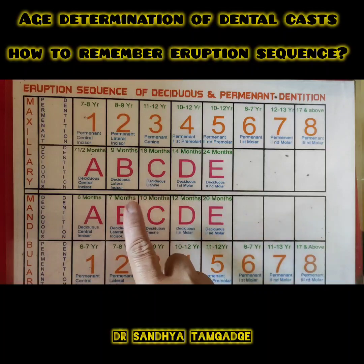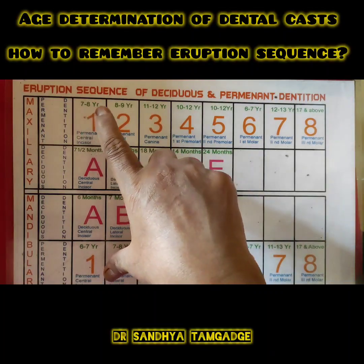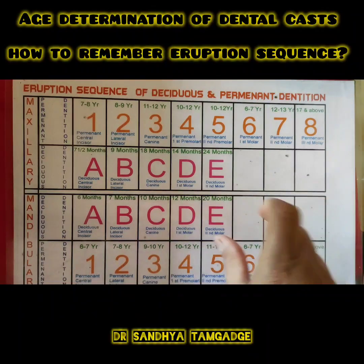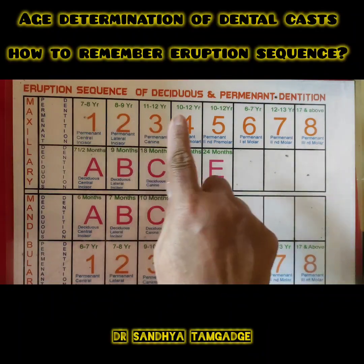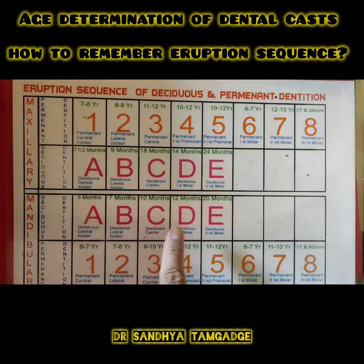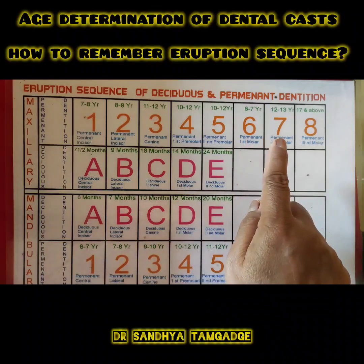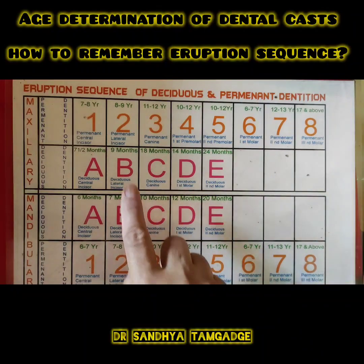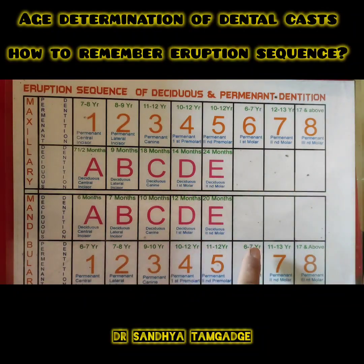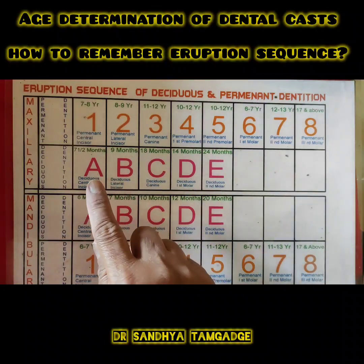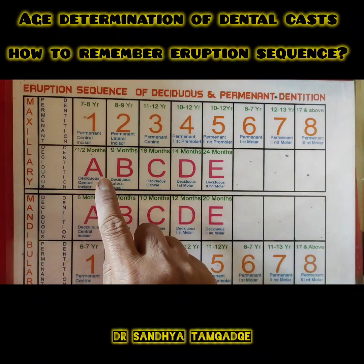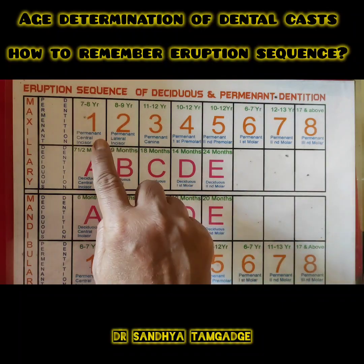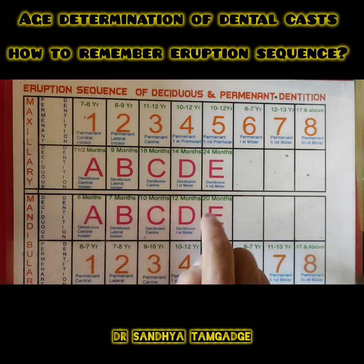There are four rows. The upper and lower rows represent permanent teeth, labeled 1 2 3 4 5 6 7 8 for the upper and lower quadrants. The middle two rows show the deciduous dentition, labeled A B C D E for both the upper and lower deciduous quadrants.